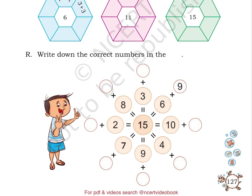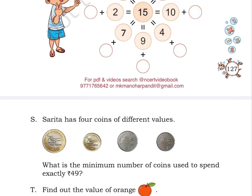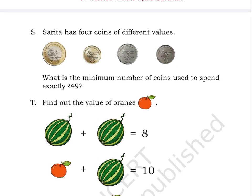Page number 128. Puzzle S: Sarita has 4 different types of coins, each with different value. First coin is of Rs. 10, second coin is of Rs. 5, third coin is of Rs. 2 and the fourth one is of Rs. 1. What is the minimum number of coins used to spend exactly Rs. 49?